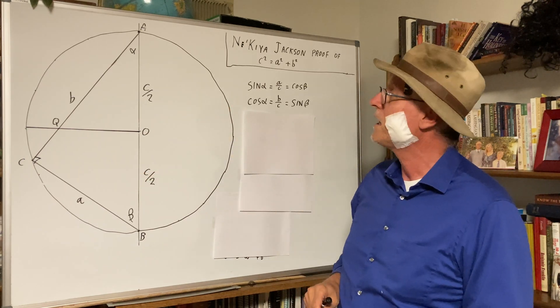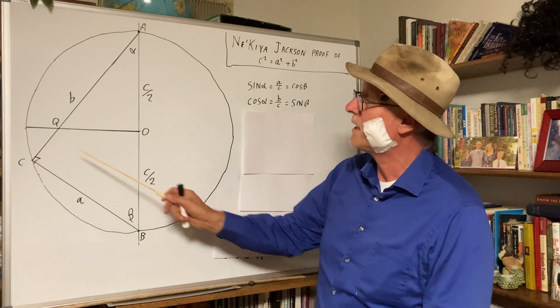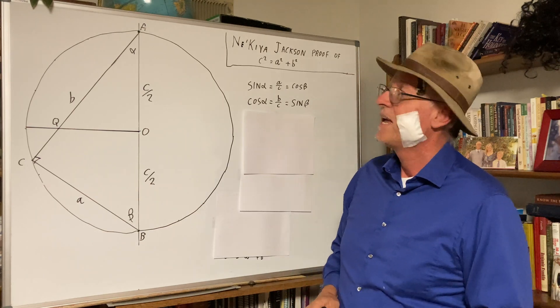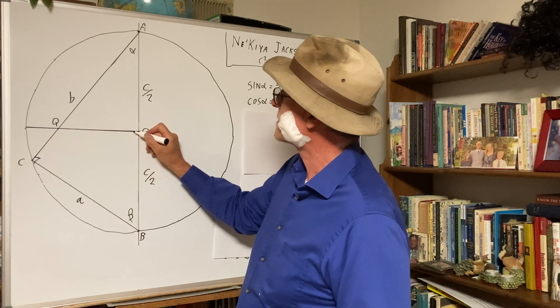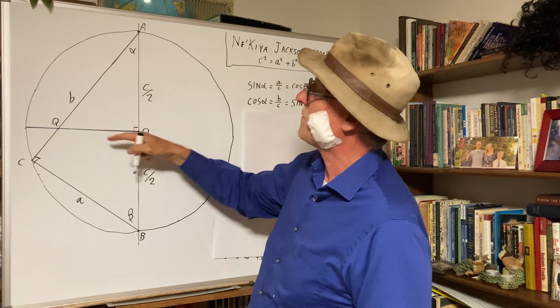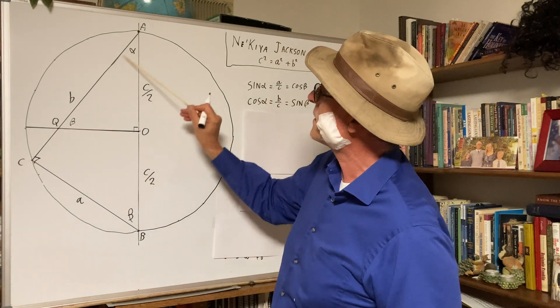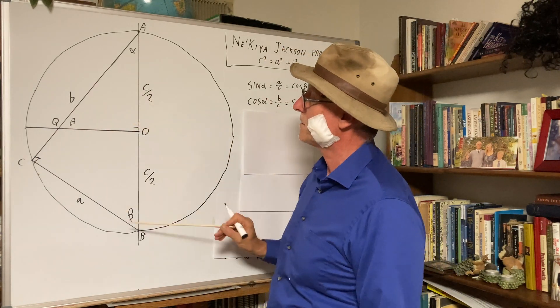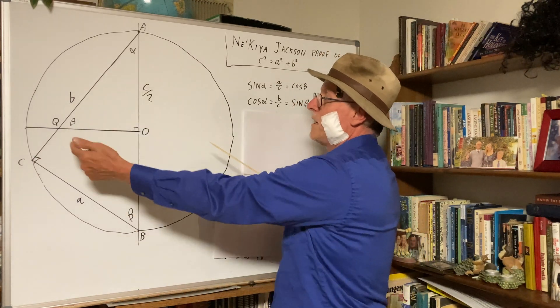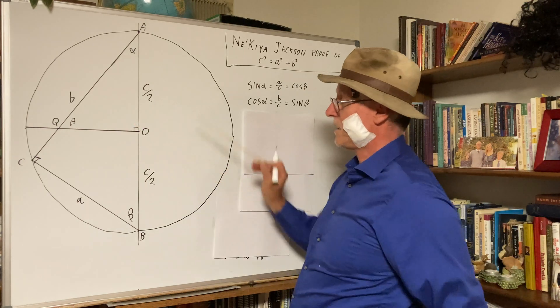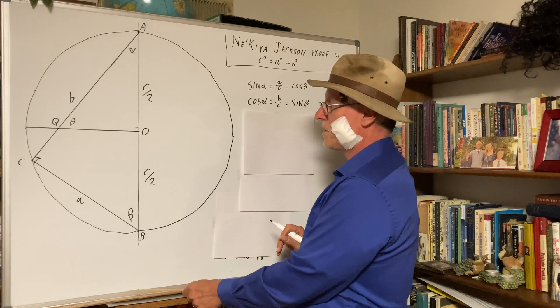And so we have angles alpha, beta, and 90 degrees. And we have similar triangles. This is 90 degrees. This is alpha. This has to be beta. So these triangles, this small triangle, is similar to the big triangle because they have alpha, beta, and 90 degrees. That makes it a similar triangle.